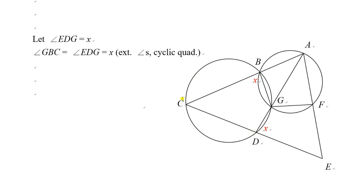We can find angle GDC equals angle EDG equals X also. The reason is exterior angles of a cyclic quadrilateral.